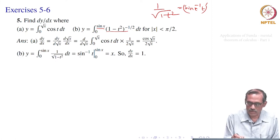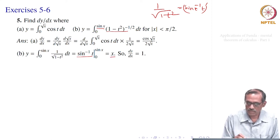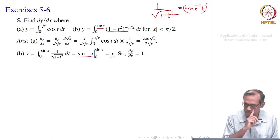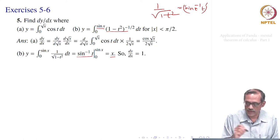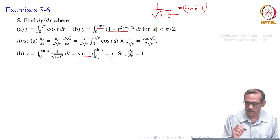So, 1 by square root of 1 minus t squared gives sin inverse t, evaluated at sin x and 0. At sin x, it gives sin inverse of sin x, which equals x. So, remember our inverse functions — this notation gives only the principal value. If you do not get the principal value, you have to add some multiples of pi. So, sin inverse of sin x, since it is principal, we get x back. And at 0, sin inverse of 0 is also 0.